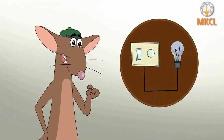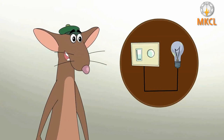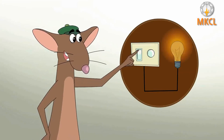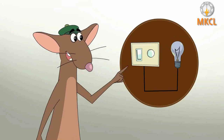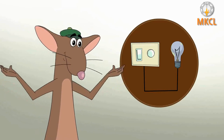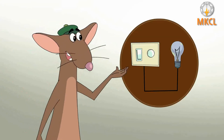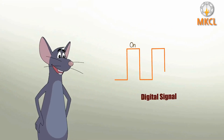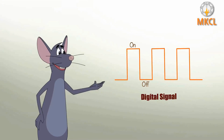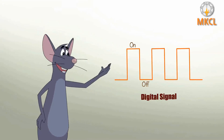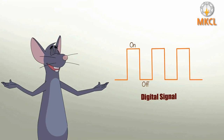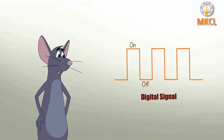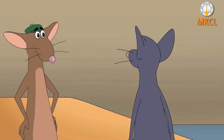Absolutely right — you are smarter than you think. Now, if I switch the light on and off like this, it is similar to a digital signal, where the signal has only two values: on or off. Now I understand these graphs. This means in digital, this is on and this is off. So the graph represents only two values — one off and the other on.